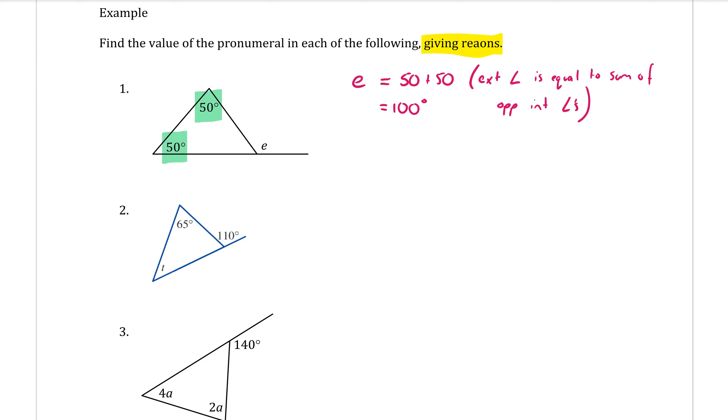Alright, let's do question two. In this question we actually have the angle outside. The exterior angle out here is 110 and I'm trying to find one of the angles inside. Now I know that the two angles inside here, the T plus the 65, together make that exterior angle which is 110 degrees.